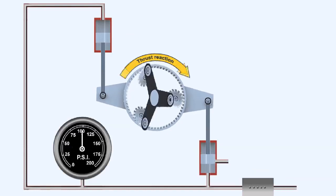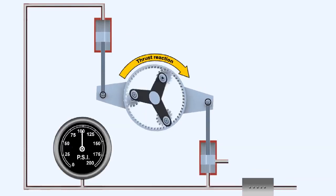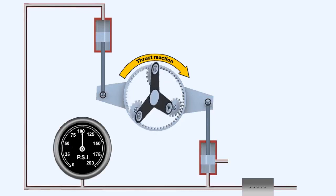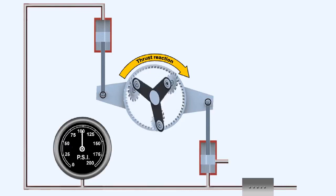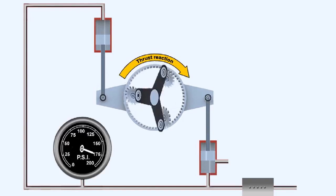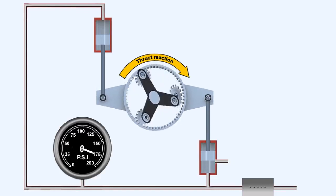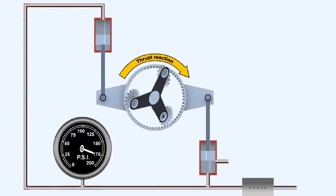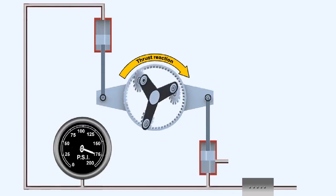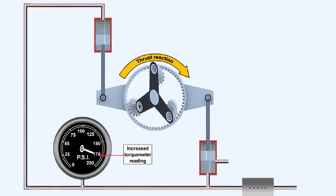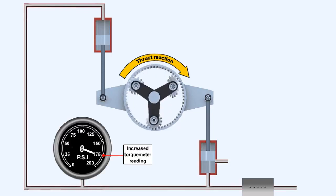If the engine torque increases, the piston will be driven by rotation of the stationary ring gear to cover more of the bleed hole. This will cause the oil pressure within the cylinders to increase until the piston moves back into the sensitive position, where torque meter oil pressure once again balances engine torque. The increase in oil pressure required to achieve this balance is indicated on the torque meter gauge as a rise in engine output torque.